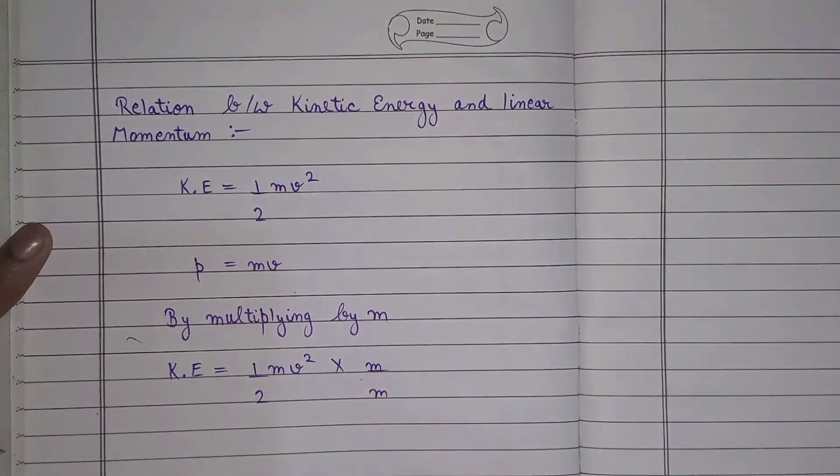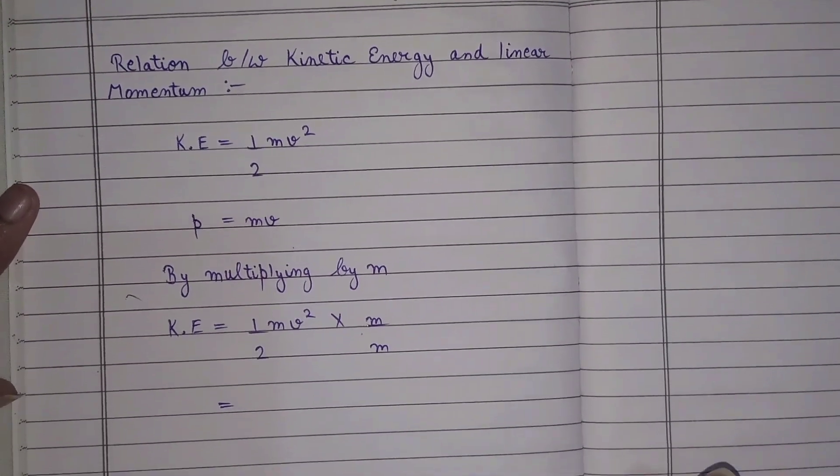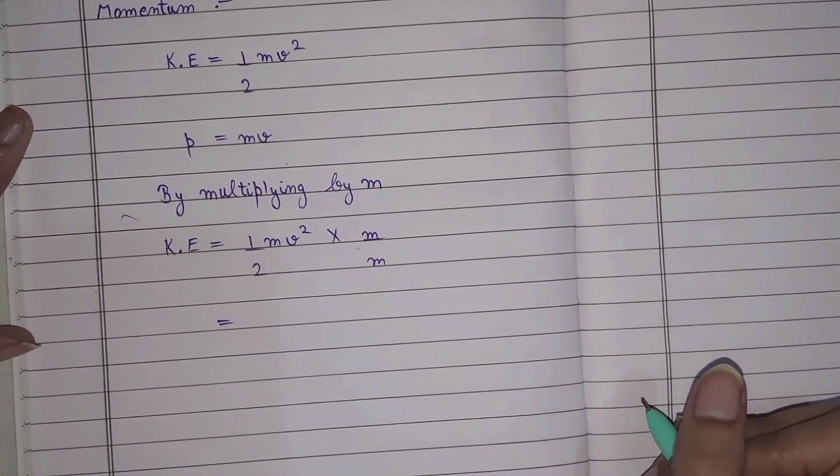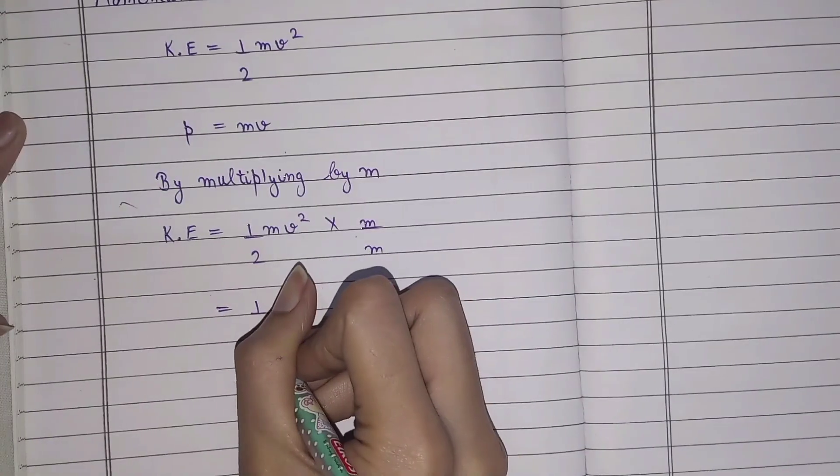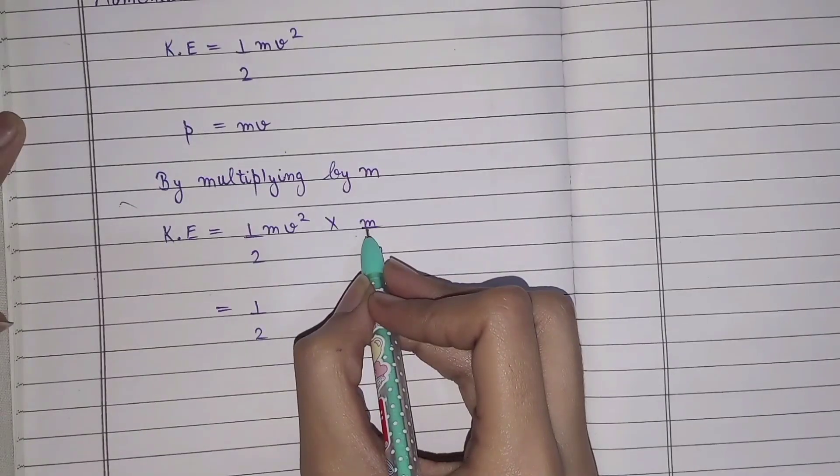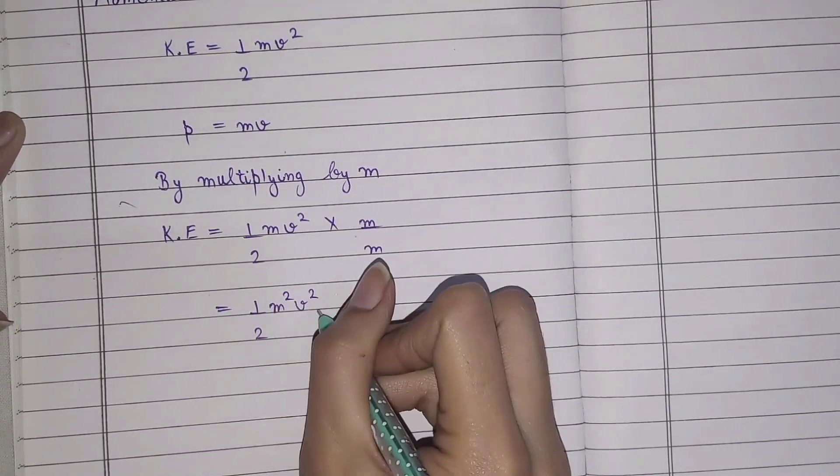Now we will solve this further. So we write 1/2 m, and m times m is m², then v² as it is.